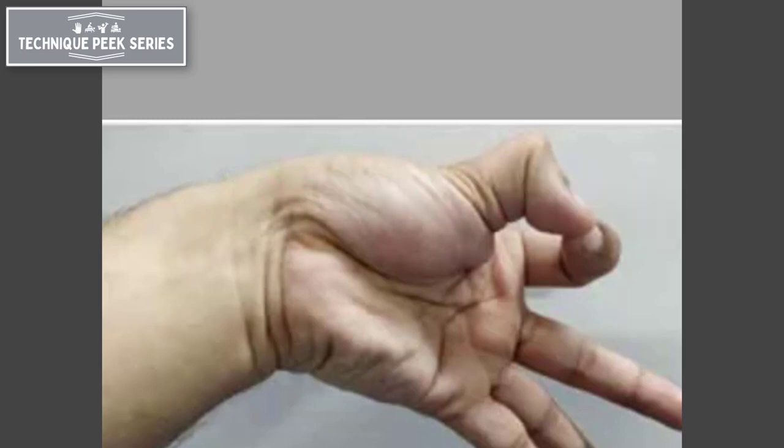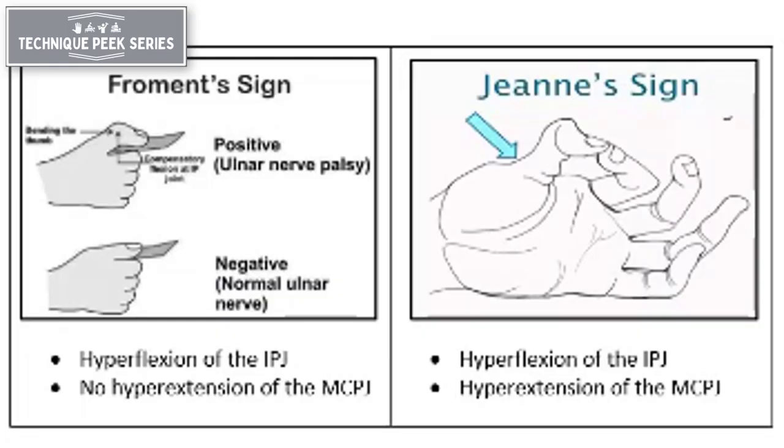Froment's sign is indicated by a hyperflexion of the IP joint when you're trying to remove the paper from the patient, and Jeanne's sign is a hyperextension of the MCP joint.